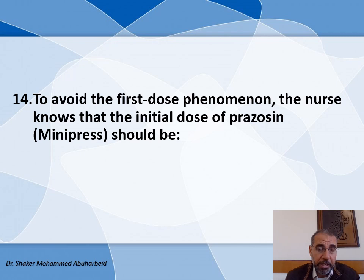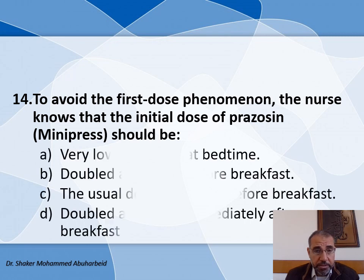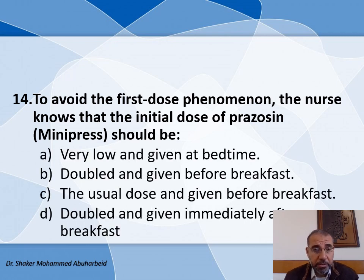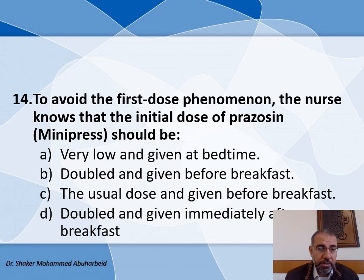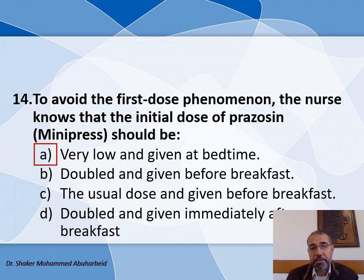Question number fourteen: An important nursing consideration when handling the drug Prazosin — the choices are: A) The dose should be very low and given at bedtime, B) Doubled and given before breakfast, C) The usual dose given before breakfast, D) Doubled and given immediately after breakfast. The first dose should be very low and given at bedtime to avoid orthostatic hypotension, which is the first-dose phenomenon common in patients taking this drug. So the answer is A.